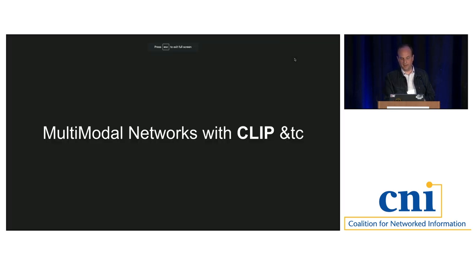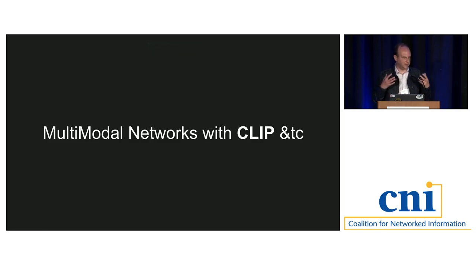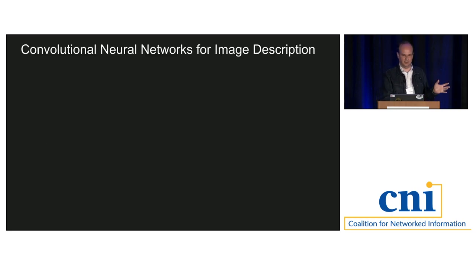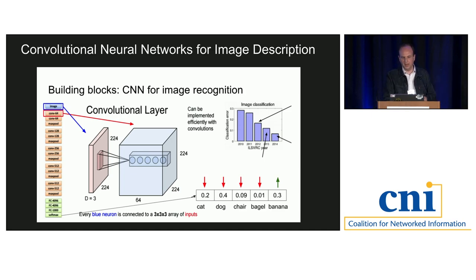Having described how transformers can topic model abstracts, the real question for libraries and museums is that a lot of what we have isn't text. At Stanford we have 150,000 negatives taken by Andy Warhol, or oil paintings in the Yale Center for British Art. For that we need to think beyond text and think about linked text-image networks. In the past we'd do this with convolutional neural networks — which describe cat, dog, bagel, banana on your phone.